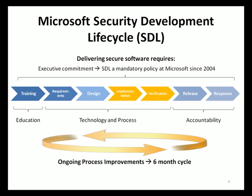In the requirements phase, requirements for security and privacy must accompany functional requirements of the software being created. Such requirements may include the use of encryption, authentication, and other security measures based on business requirements, exposure, and sensitive data. A security and privacy risk analysis is performed at this stage. In addition, the threshold for security and privacy, or bug bar, is defined during this phase to ensure that bugs with certain severity are addressed and resolved before the software is officially released.